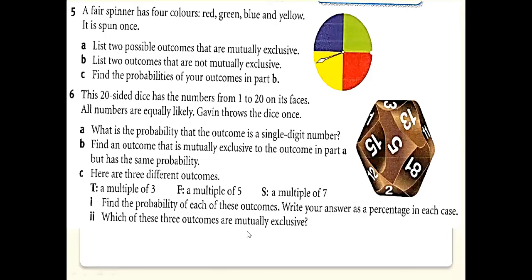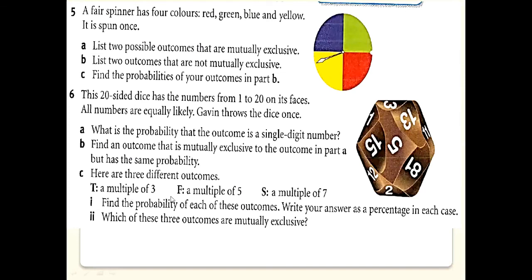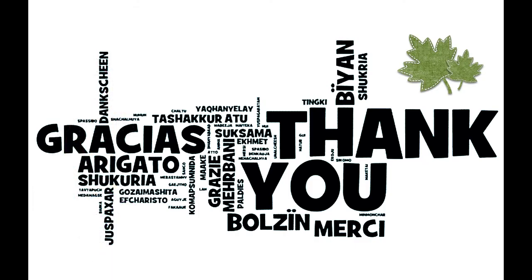Now, which of these three outcomes — T (multiples of 3), F (multiples of 5), and S (multiples of 7) — are mutually exclusive? T and S are mutually exclusive because between 1 and 20, no number appears in both the 3-times and 7-times tables. F and S are also mutually exclusive — no number from 1 to 20 is in both the 5 and 7 tables. However, T and F are not mutually exclusive because 15 appears in both the 3-times and 5-times tables. Thank you so much, class — I hope you understand.